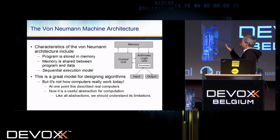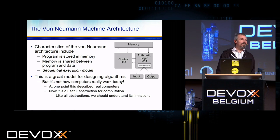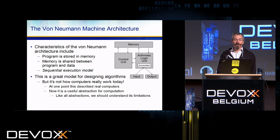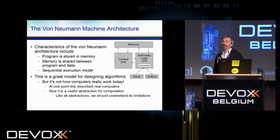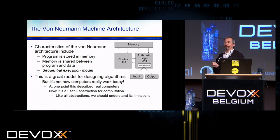The classic von Neumann architecture has programming stored in memory, memory shared between programs and data, and a sequential execution model — one instruction and the next and the next to get your problem done. It's a great model for thinking about algorithms, but it's not actually how computers work today. It's a nice abstraction, good enough that we always typically think about it until you get into real multi-core, multi-threaded situations, or you're trying to get performance out and don't understand why your code is slow.